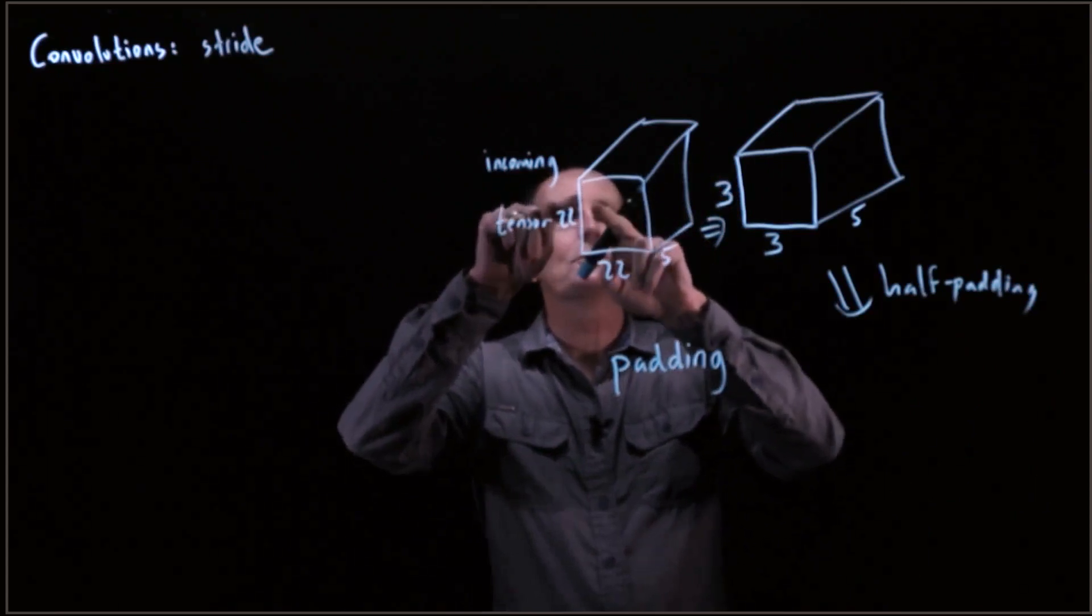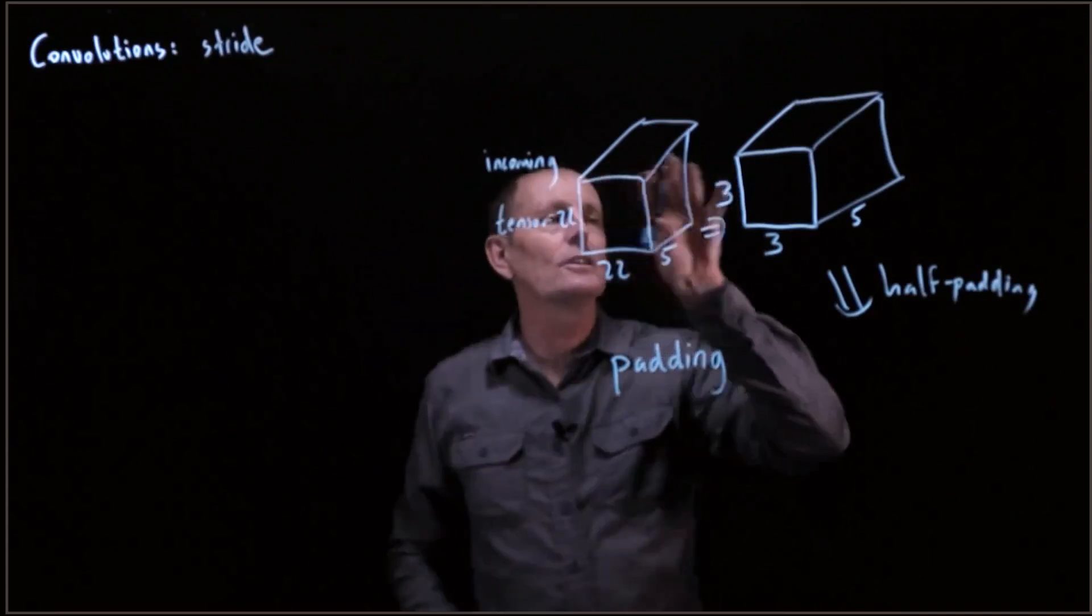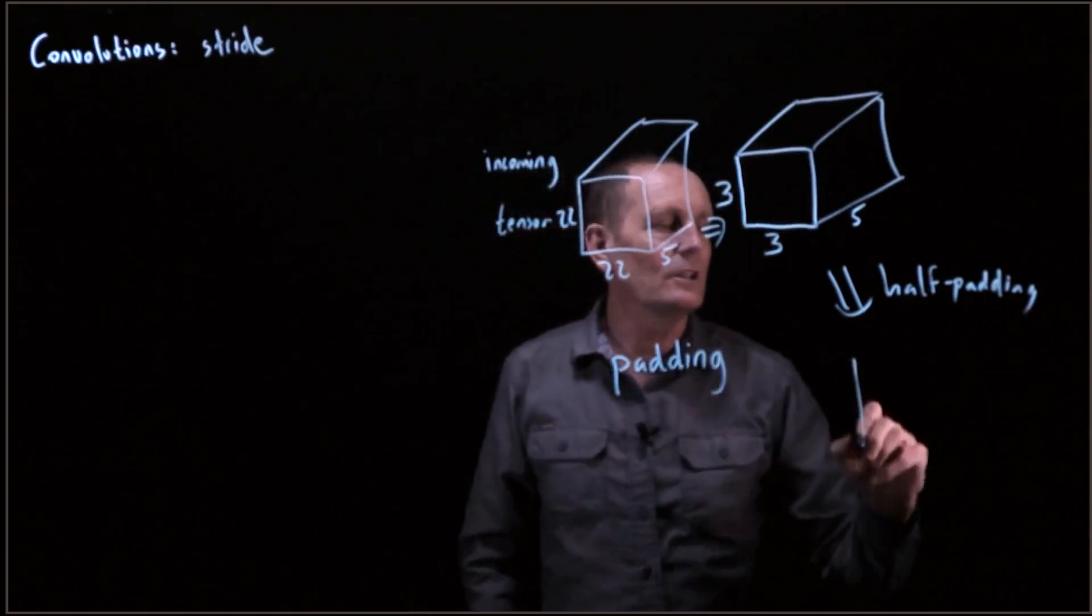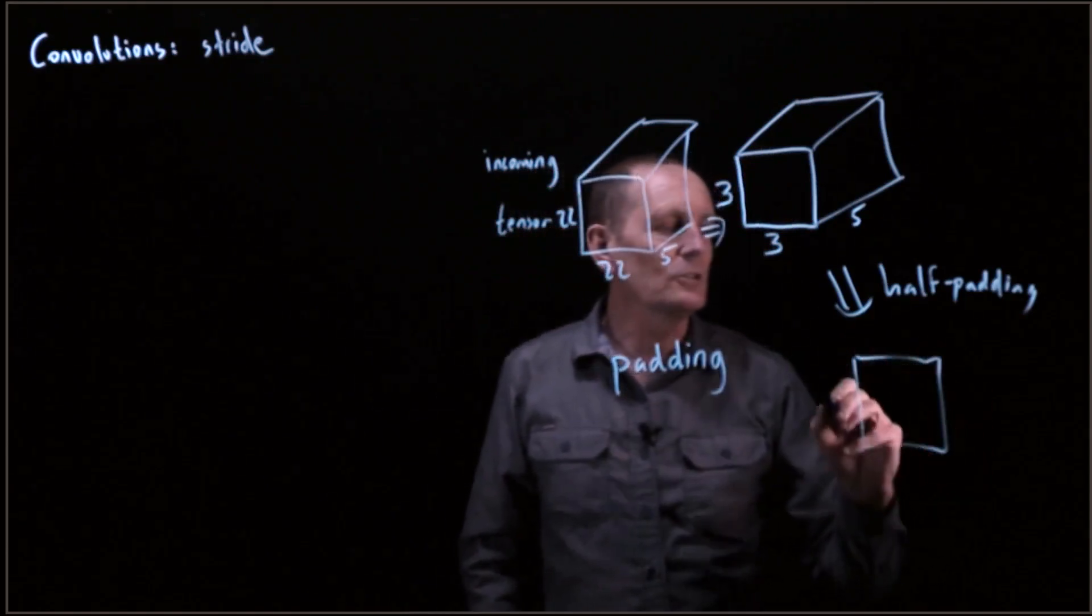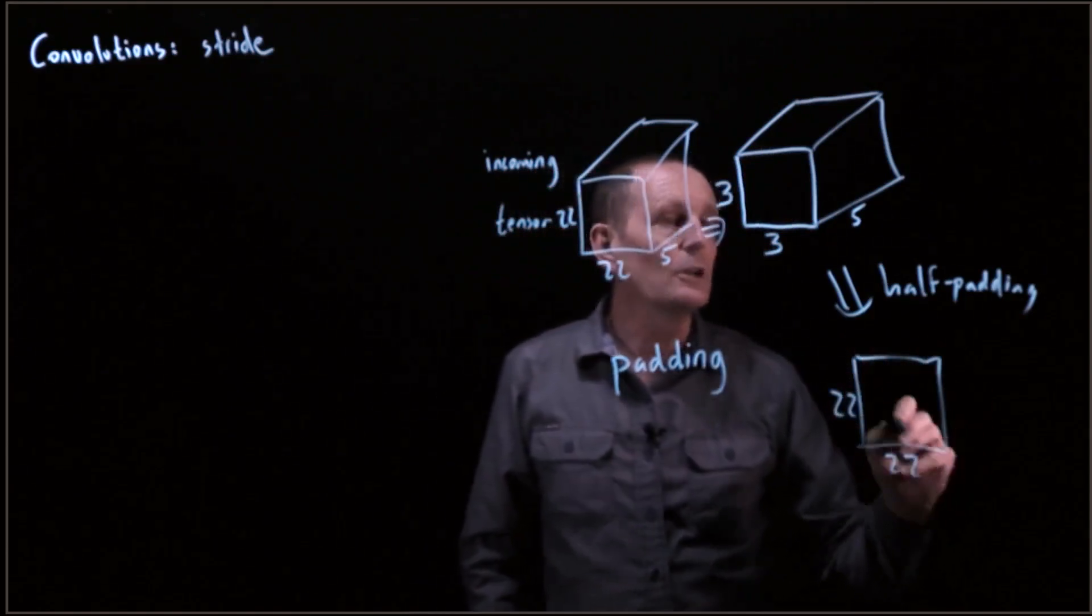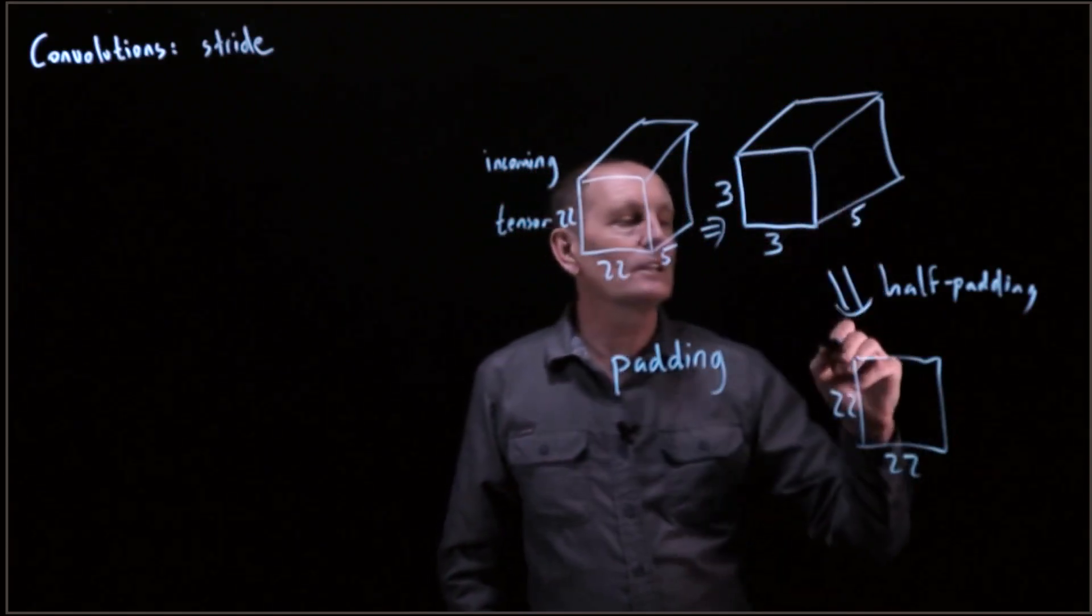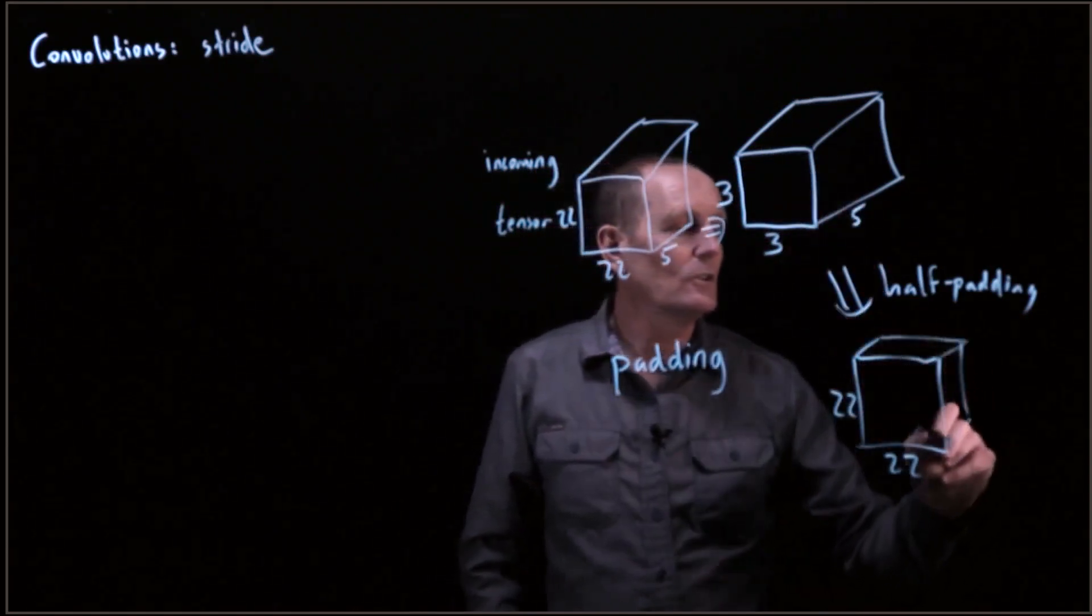for every one of these 22 by 22 entries, we would center the 3 by 5 kernel here and we would get a single pixel. So our output would be a 22 by 22 by, for this particular convolution, 1.